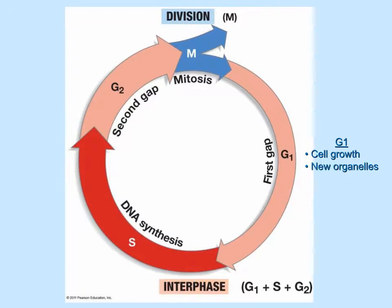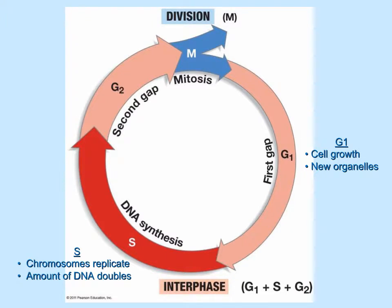During the G1 phase of interphase, the cell grows, carries out its normal functions, and produces new organelles to keep up with its increase in size. During the S phase, the chromosomes replicate, which results in a doubling of the amount of genetic material in the nucleus. And in G2, the cell continues its normal functions and prepares to divide.